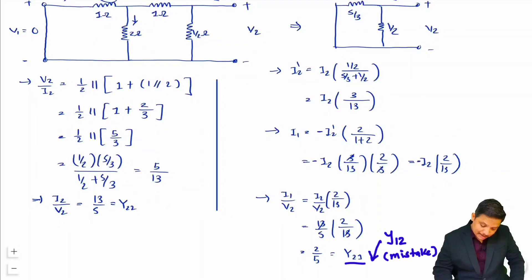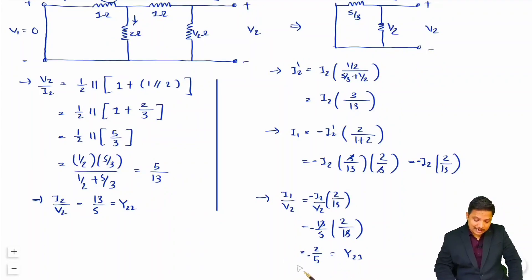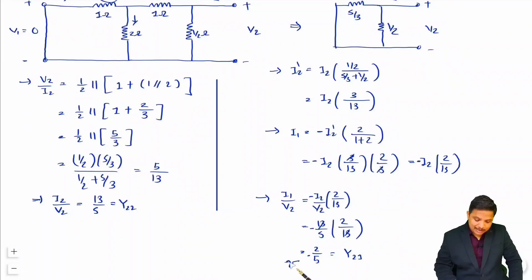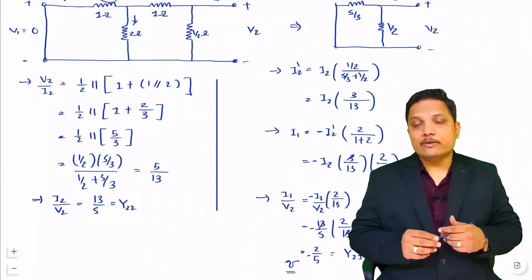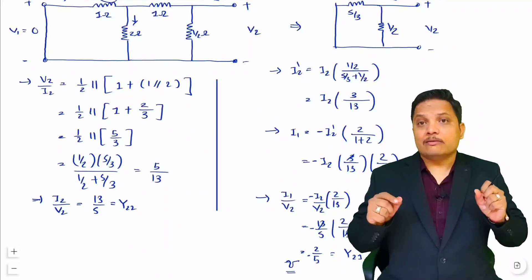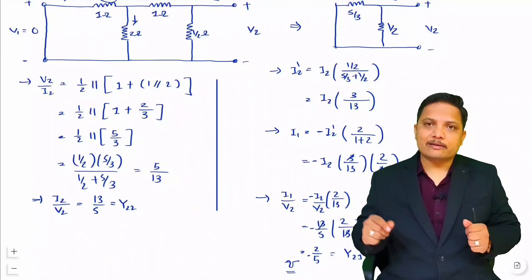I made a mistake earlier — y21 is negative, giving −2/5. Do not make this mistake. For a purely resistive network, y21 and y12 will always both be negative — that is a helpful check. I hope you understood this video. If you have any queries, place them in the comment box and I'll get back to you. There will be many more problems in this playlist. Thank you so much for watching.